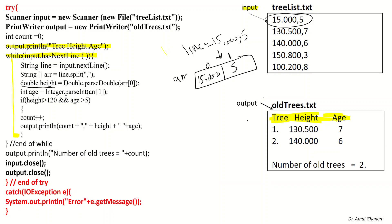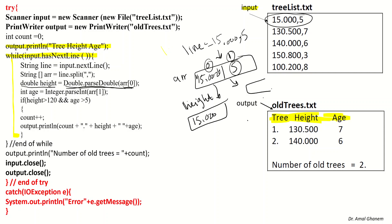We declare a variable height and parse arr[0]: double height = Double.parseDouble(arr[0]). Since arr[0] is a string, we convert it to double — so height gets the value 15.0. Then we do the same for age using arr[1]: int age = Integer.parseInt(arr[1]), converting the string at location 1 to an integer, so age gets the value 5.